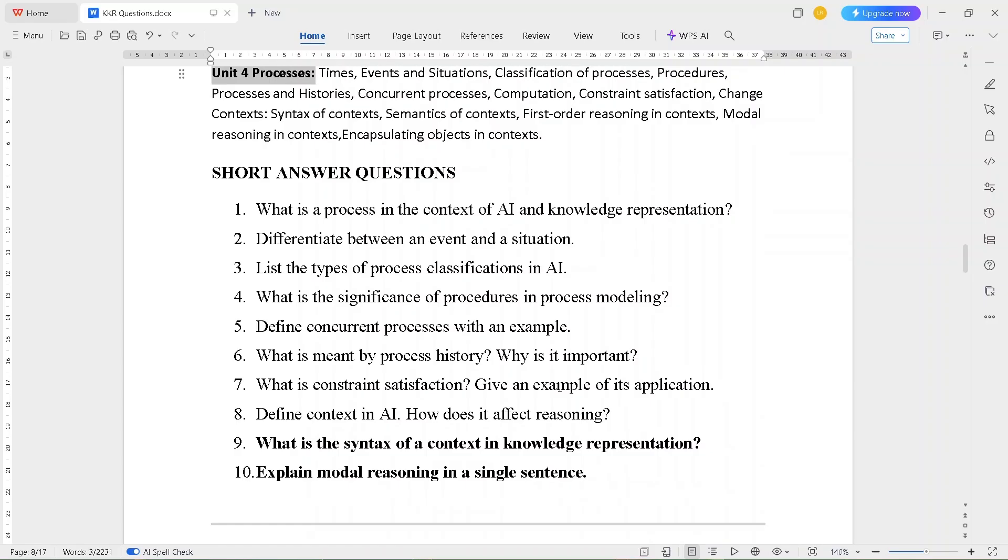The short answer questions are: What is a process in the context of AI and knowledge representation? Differentiate between an event and a situation. List the types of process classifications in AI. What is the significance of procedures in process modeling? Define concurrent process with an example. What is meant by process history? Why is it important?